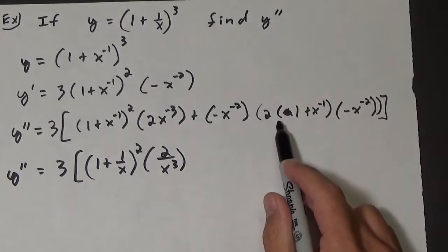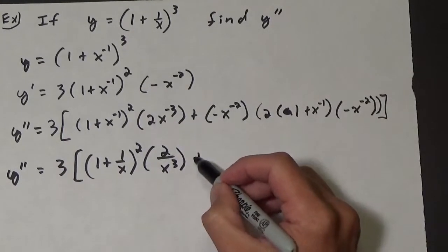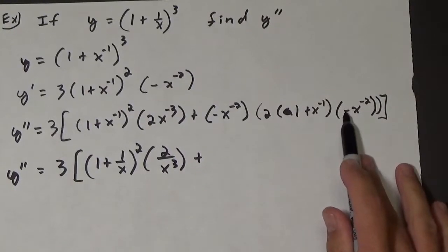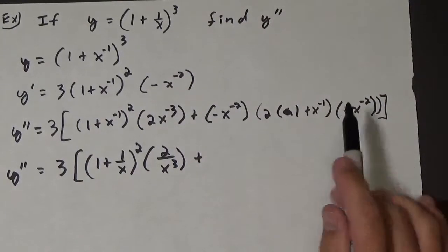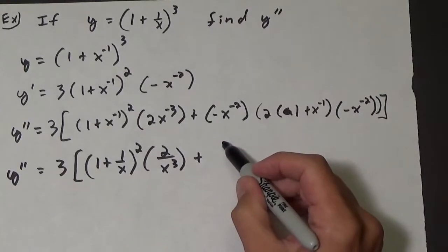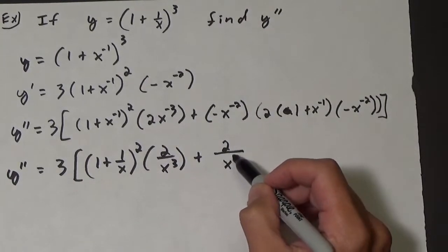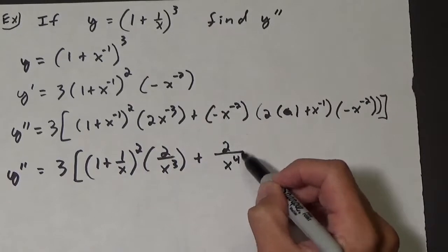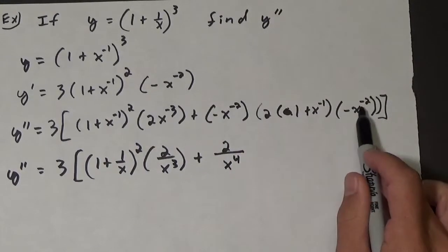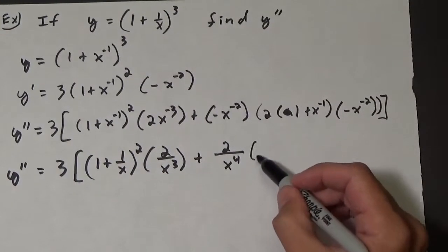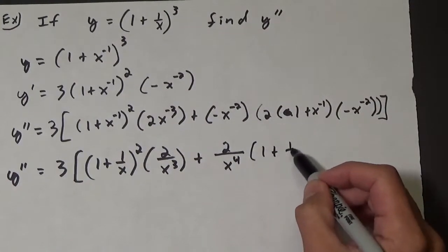We have 1 plus 1 over x squared times 2 over x cubed. And then we're going to add on, we have a negative and a negative makes it a positive. And then this is going to be 2 over x to the fourth, because x to the negative 2 times x to the negative 2 is x to the negative 4, and then this is going to be times 1 plus 1 over x.